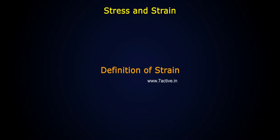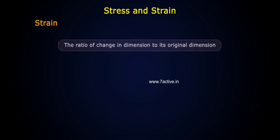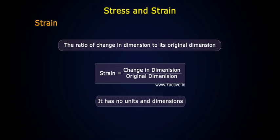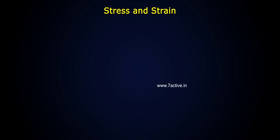Definition of strain: The ratio of change in dimension to its original dimension. Strain is equal to change in dimension by original dimension. It has no units and dimensions.